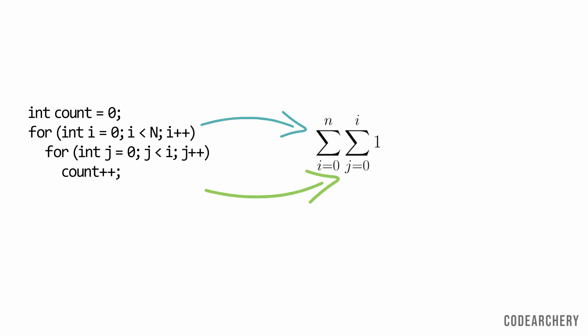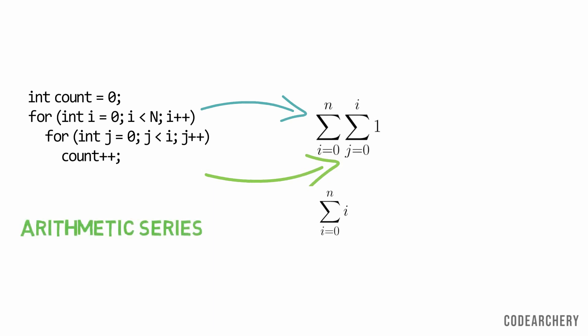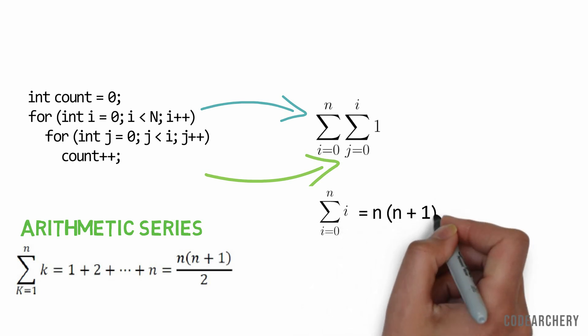So we know that summation of 1 is total index. So our equation reduced to sum of i from i equals 0 to n. There is one formula for arithmetic series, which is n into n plus 1 divided by 2. So we are applying that formula.